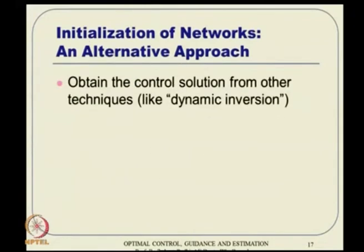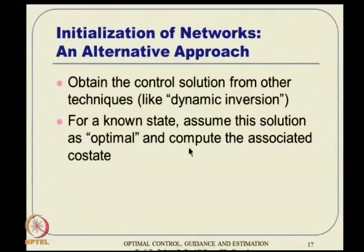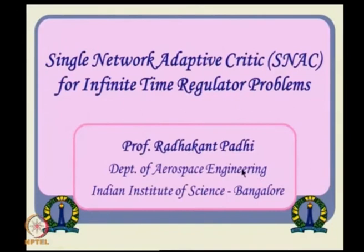An alternative initialization is to obtain a control solution from other techniques such as dynamic inversion, assume it is optimal for a known state, and compute the associated costate via pseudo-inverse. However, this approach is tricky when control dimension is much smaller than state dimension. If dimensions are compatible, this avoids linearization entirely. Once the initial control and costate solutions are available, the networks can be pre-trained using that data.